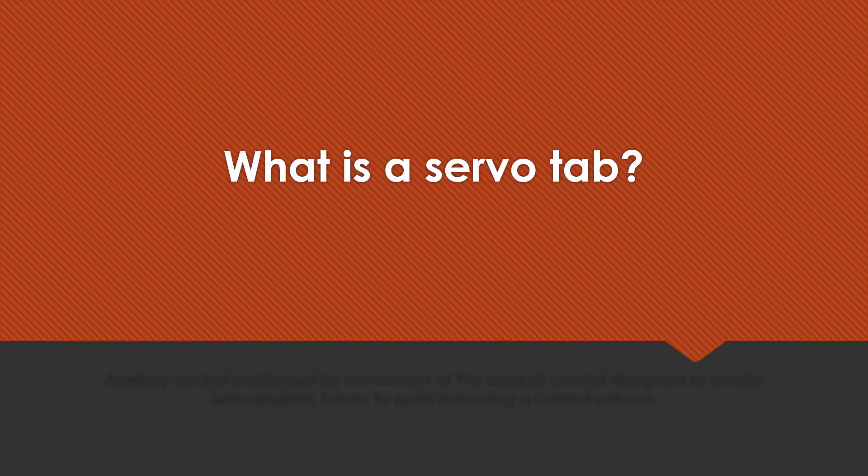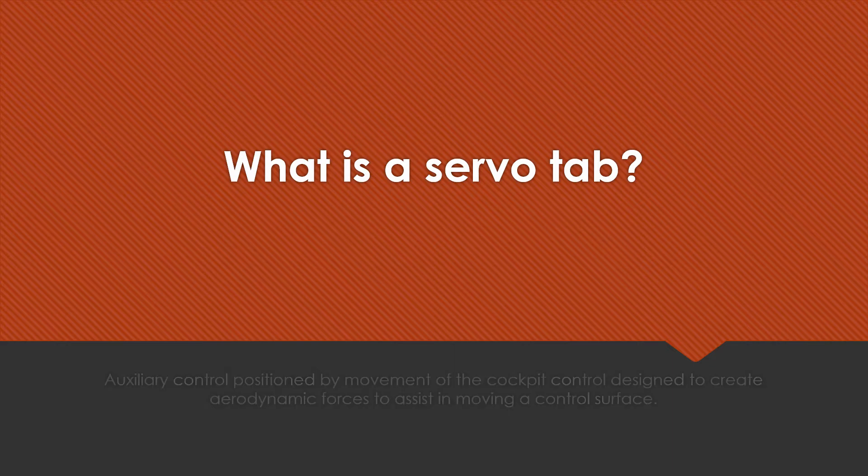What is a servo tab? It's an auxiliary control positioned by movement in the cockpit, designed to create aerodynamic forces to assist in moving a control surface.